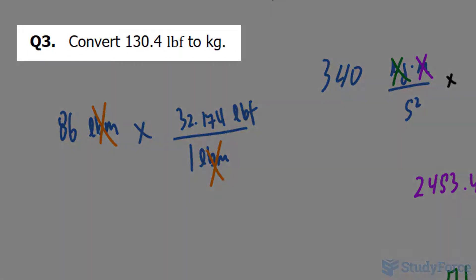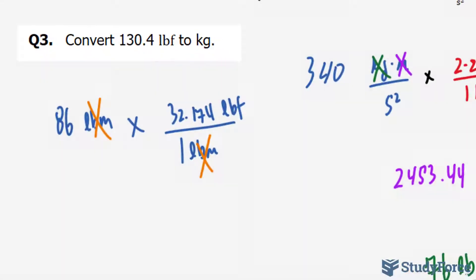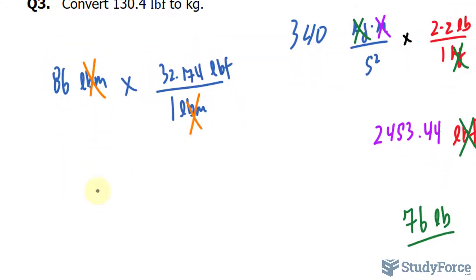In question 3, we're asked to convert 130.4 lbf to kilograms. So let's start by writing out what 130.4 lbf means. That's the equivalent of a newton whose units were in kilograms times meters per second squared. Now they have the units pounds times foot per second squared. Notice that this is in imperial and that is in metric. So whenever you have pounds times foot per second squared, you can replace that with lbf.